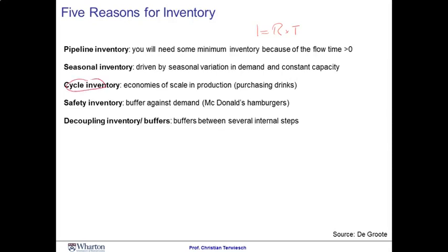The third reason is cycle inventory. As in the McDonald's example, economies of scale in production or purchasing drive batch buying. Just as in your household you might drink a bottle of beer a day but buy a whole case at once — the other bottles sit in inventory. The fourth reason is safety inventory: McDonald's doesn't want to run out of hamburgers, so they produce ahead of demand and keep a little safety stock to ensure customers don't have to wait. Finally, the fifth reason is decoupling inventory — buffering not just from external customer demand, but also from internal variability from other process steps in the operation.